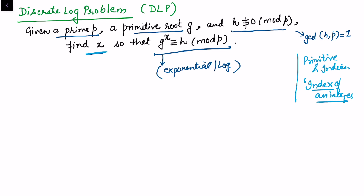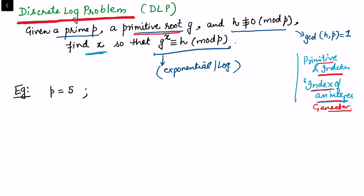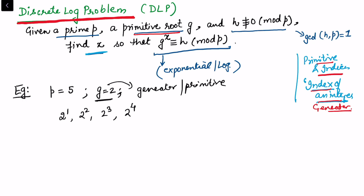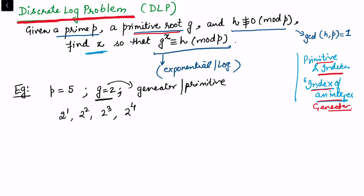It is assumed that the discrete log problem is not easy to solve with current computers and computation algorithms, which is why it has huge applications in cryptography. From a number theory point of view, this is the same as the index of a problem with primitive roots. I'll explain what we mean by generator or primitive root with a simple example — suppose we choose a prime p = 5 and a primitive root g = 2.